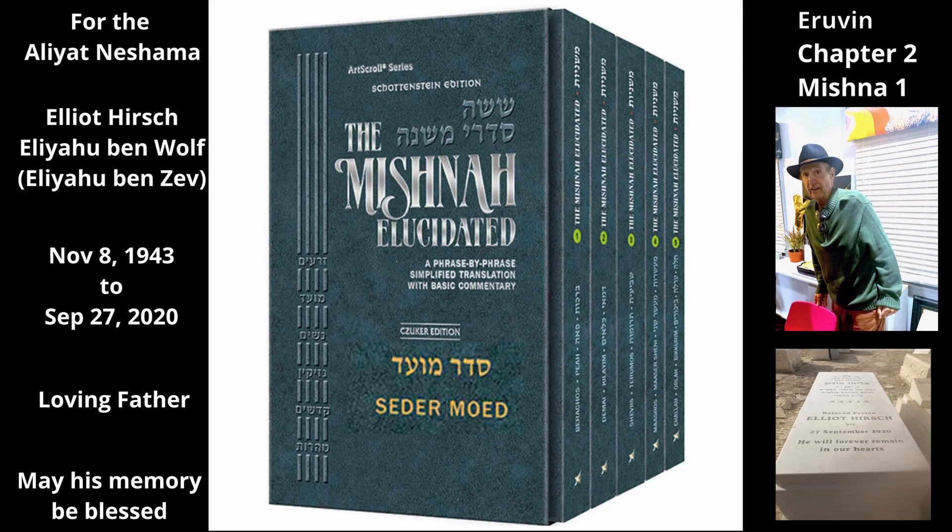Chapter 2, Mishnah 1. The Mishnah discusses the law of a well that is located in the public domain. A standard well, which is at least 4 tefachim wide, 4 tefachim long, and 10 tefachim deep, is a private domain. Therefore, it is biblically forbidden to draw water from a standard well that is in a public domain and put the water down next to the well.